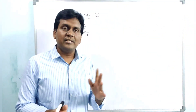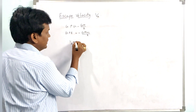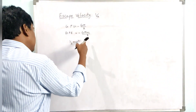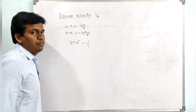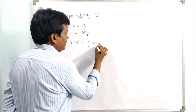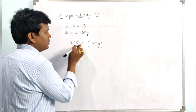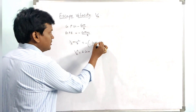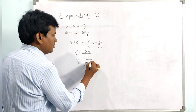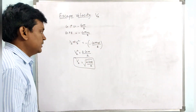The kinetic energy and potential energy of the body should be equal. Kinetic energy is (1/2)mv²_e, and setting this equal to the magnitude of gravitational potential energy: (1/2)mv²_e = GM/R. Solving, v²_e = 2GM/R, so the escape velocity ve = √(2GM/R). The escape velocity depends on these parameters: universal gravitational constant G, mass of the planet M, and radius of the planet R.